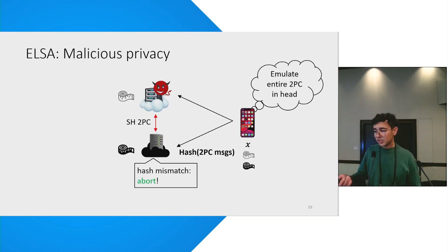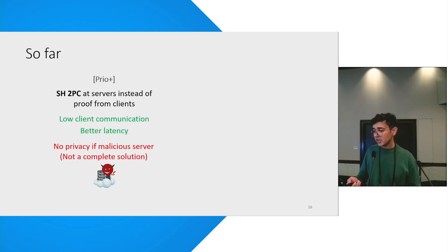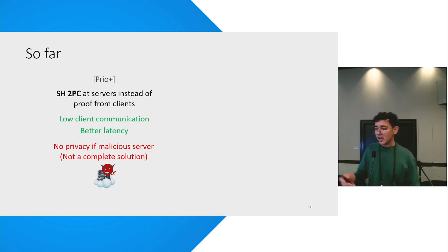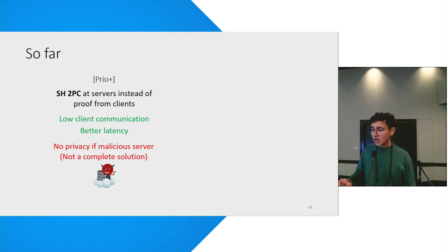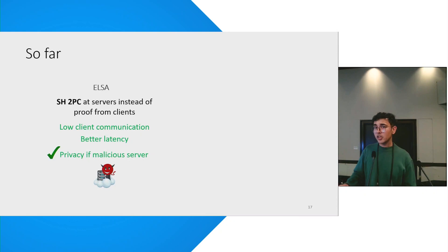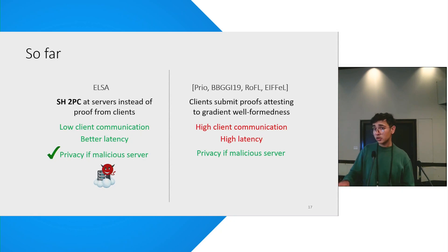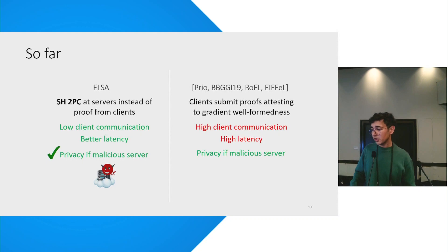So this is how we solve the problem. We started off with the Prio+ protocol, which had good efficiency guarantees but did not provide privacy when a server is malicious. We have fixed that problem while also preserving the efficiency guarantees. Putting this into context with prior work which also provides the same guarantees, we have solved both the efficiency problems that those works incurred.